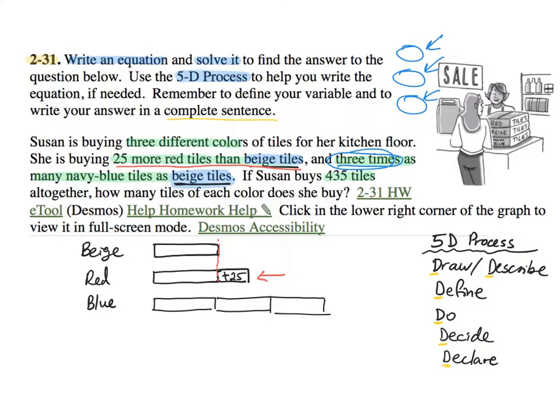So now clearly I can say let the variable X be the beige. So I'm right now defining the variable X. I'm saying let X be the missing information or the amount of tiles for beige color. That means this is also X, but this will be X plus 25, that's the expression. This is the beige, and this one is one, two, three times, so it's three groups of X.